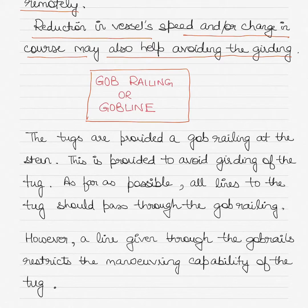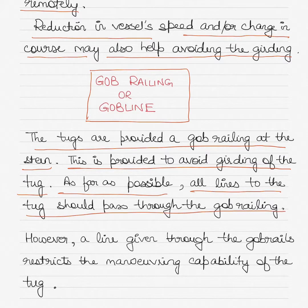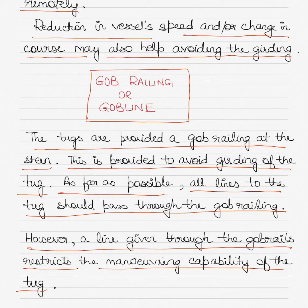I will also talk about the gob railing or gob line provided to the tug to prevent girding from occurring. The tugs are provided with a gob railing at the stern of their vessel — this is provided to avoid girding of the tug. As far as possible, all lines to the tug should pass through the gob railing. However, a line given through the gob rails restricts the maneuvering capability of the tug, and hence you will see that often many tug masters or tug operators avoid using the gob railing because it restricts the maneuverability of the tug, though it is provided to prevent the girthing of the tug from occurring.